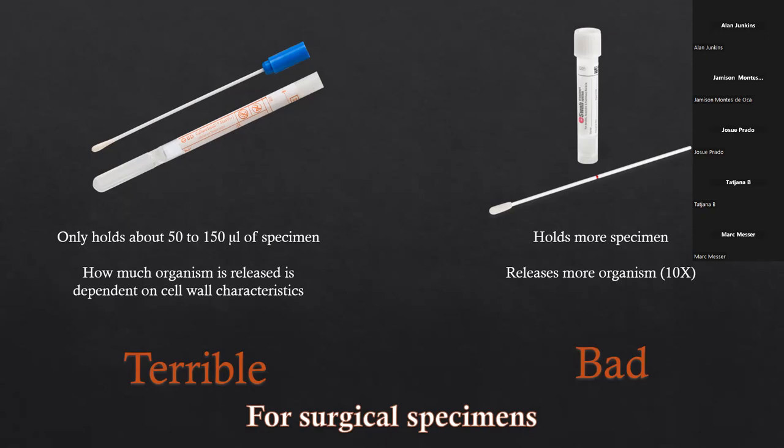These are a couple of swabs that are commercially available. The BD culture swabs — traditional rayon swabs — that rayon tip is wrapped pretty tight, it's hard for specimen to really get in there, and they don't hold much. Numbers range from 50 to 150 microliters of specimen that actually attaches. The other problem is that hydrophobic organisms, particularly acid-fast bacilli, attach to those rayon fibers and don't like to be released. These swabs are absolutely a no-go for fungal or AFB infections. On the right side, the flock swabs are newer, hold more specimen, and release more organism — still bad for surgical specimens, but a little bit better.